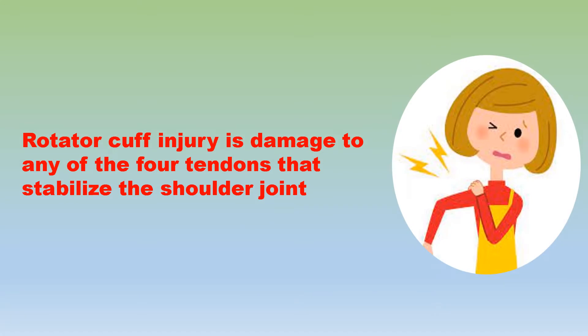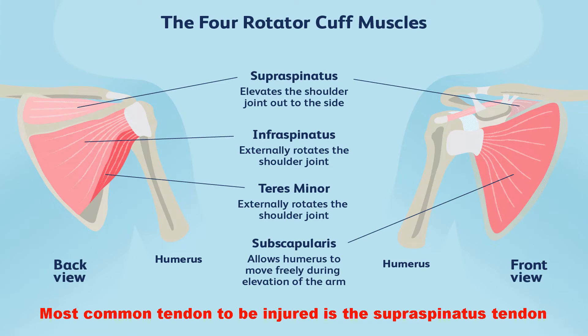Rotator cuff injury is damage to any of the four tendons that stabilize the shoulder joint. Rotator cuff muscles are abbreviated in the word SITS, which stands for supraspinatus, infraspinatus, teres minor, and subscapularis, which have an important role in the stabilization and motion of the shoulder joint.